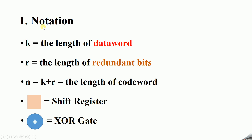First is the notation. K means the length of the data word, R is the length of redundant bits, and N is the length of the code word. This square pattern represents the shift register, and this symbol means XOR gate.